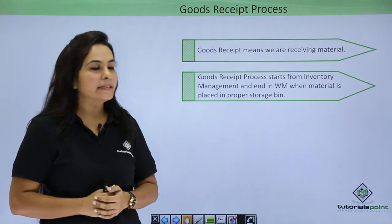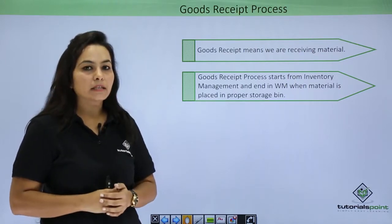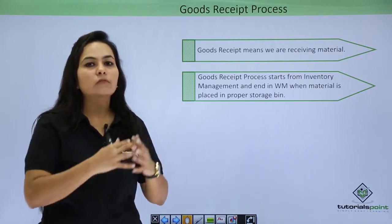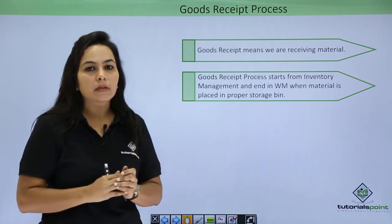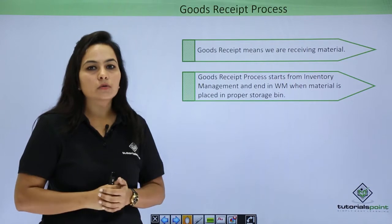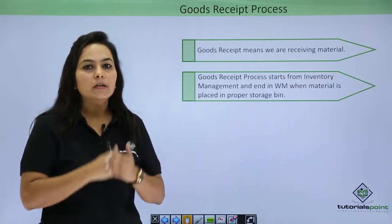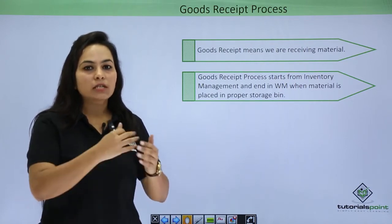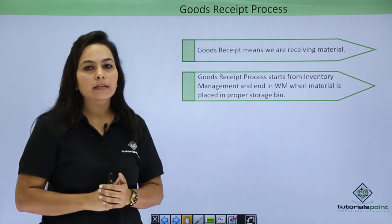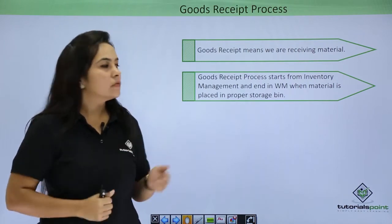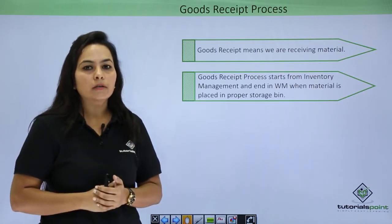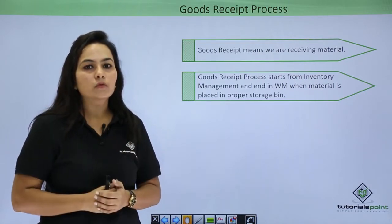Goods Receipt means we are receiving a material. The Goods Receipt Process will start from Inventory Management and it will end in WM. For example, suppose we have to procure a material from a vendor. We will create a Purchase Order, and once the Purchase Order is created the vendor will supply goods to us. A Goods Receipt document or material document will be posted and we can check stock at storage location level. This means our material has moved to the storage location, so our IM work is complete. Then we will move the material to WM — a transfer requirement will be created, then we will create a transfer order, and the goods will move to the destination bin.